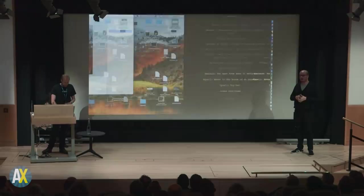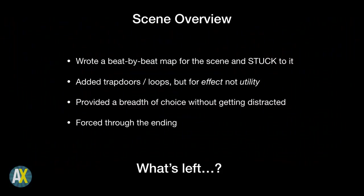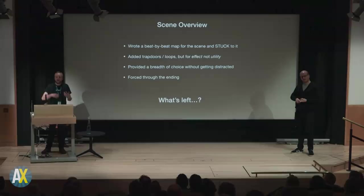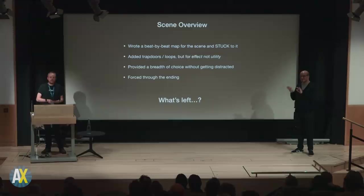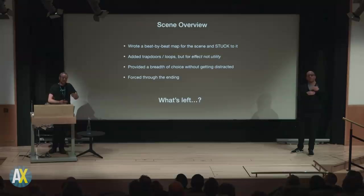So where are we? We're done. Scene by scene: we wrote a beat map so we knew exactly what we were trying to achieve and we stuck to it. We didn't sacrifice it for a goofy joke or unnecessary player agency. We added trap doors to speed things up and loops to slow things down — but for dramatic effect, not because it was good UI. We provided a breadth of choice but didn't get distracted. And when we got to the ending, we forced it — because it should be forced. That's what it's for.